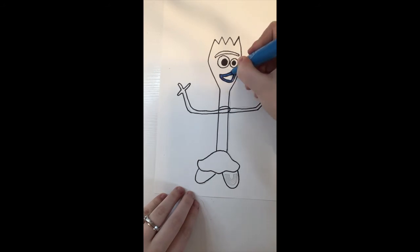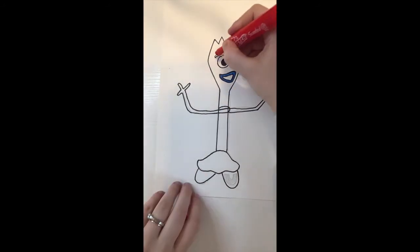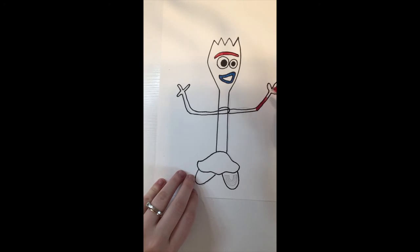So you probably saw at the end of that video that I was making a rainbow on his foot. I forgot that he had a rainbow so I added it in with a pencil. You can go ahead and do that if you choose to.